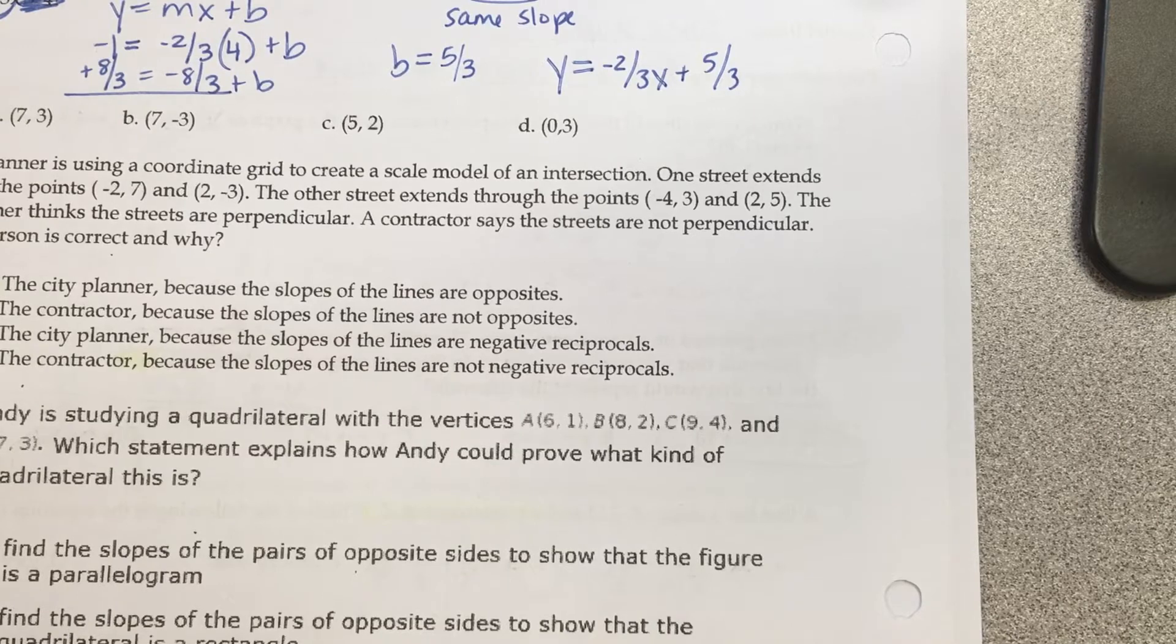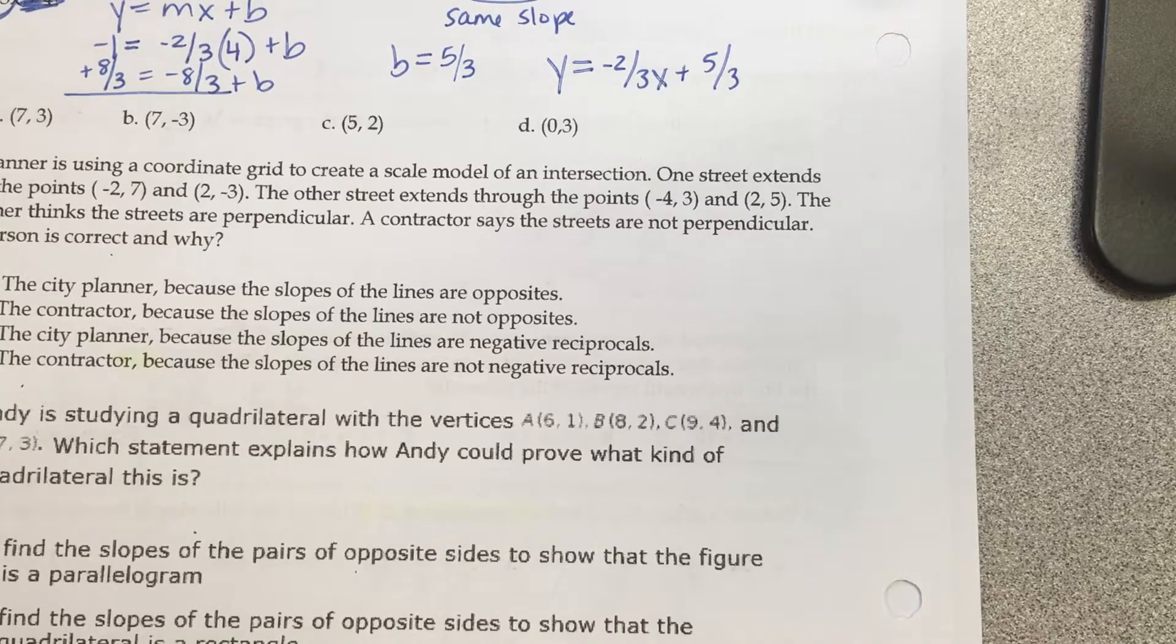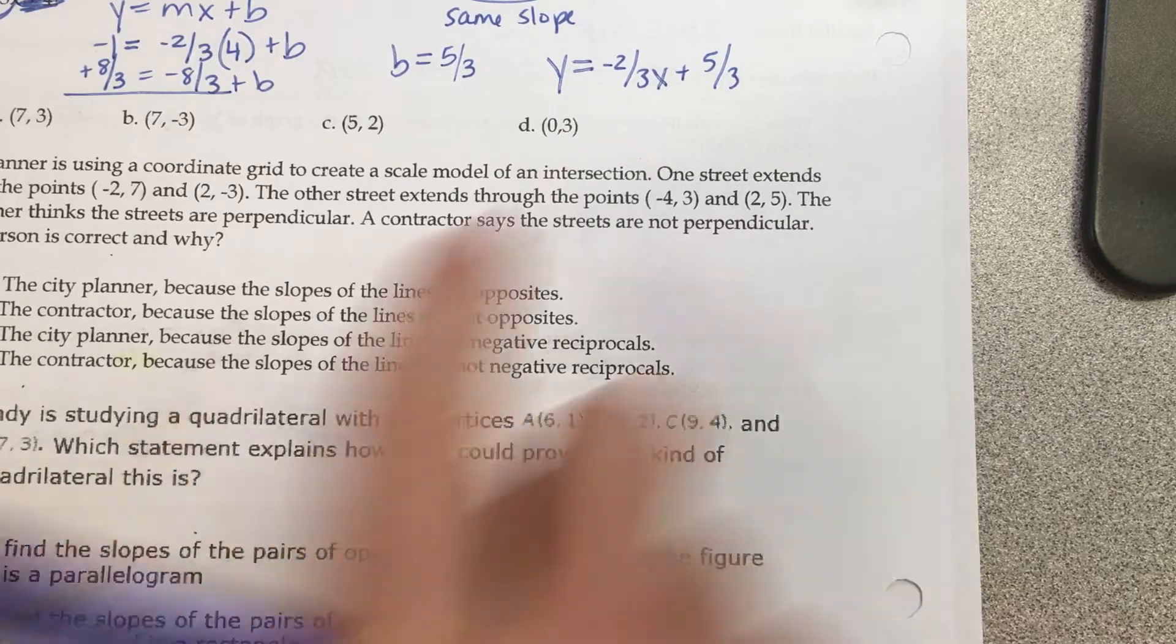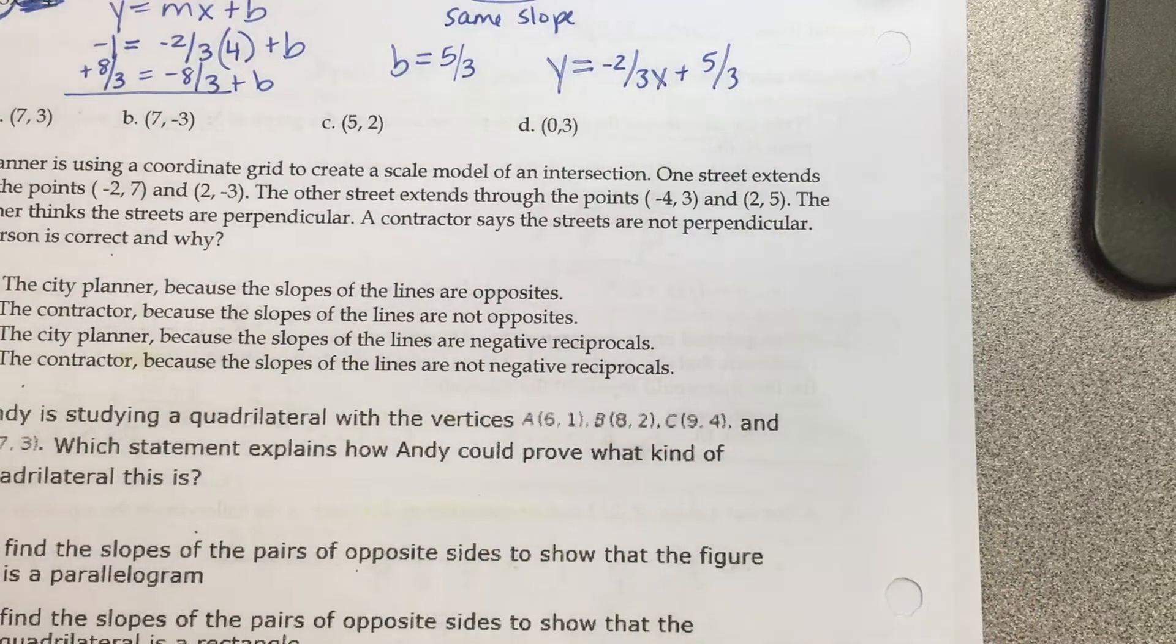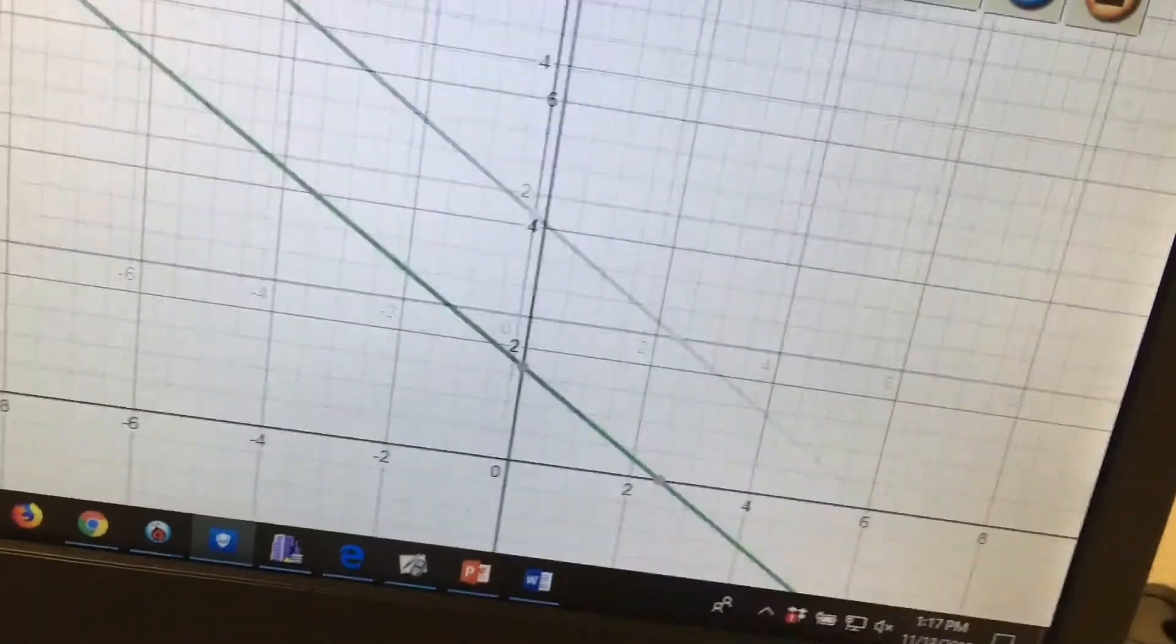Is that an answer choice? It says which point lies on the line. If this was calculator inactive, what would you have to do with each set of points? You have to plug them in, 1 for x, 1 for y. Let's assume this one's calculator active. So what could I do? What am I typing into Desmos? The y equals. I'm typing in the work that I did. So y equals negative 2/3x plus 5/3. I'm going to hit the little house button over here.